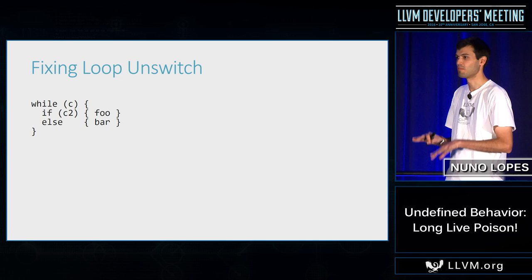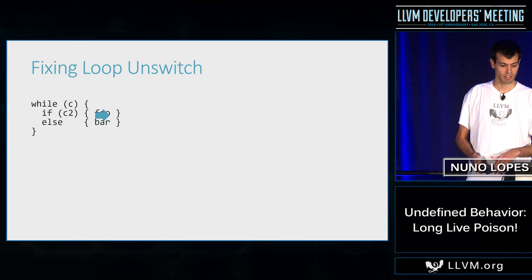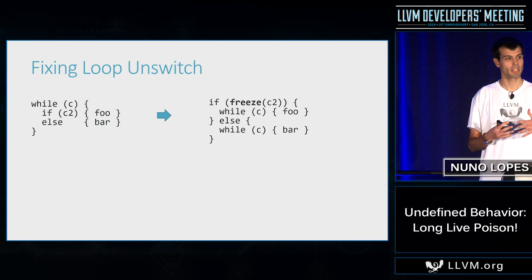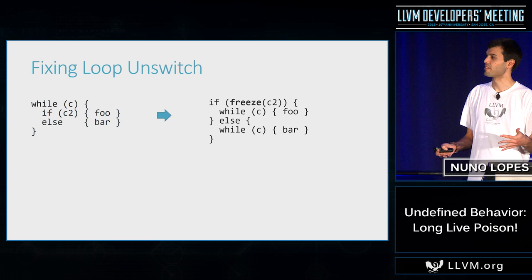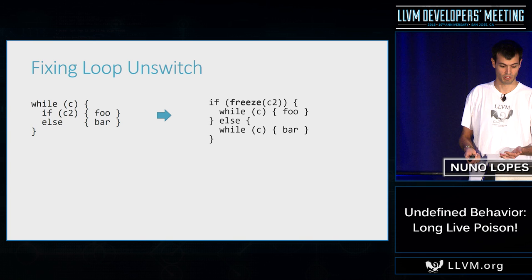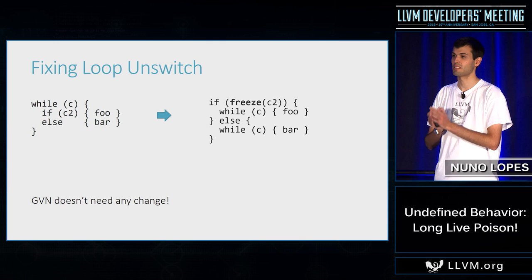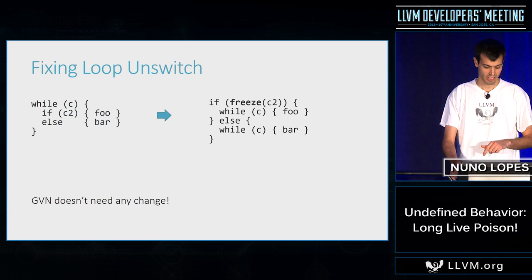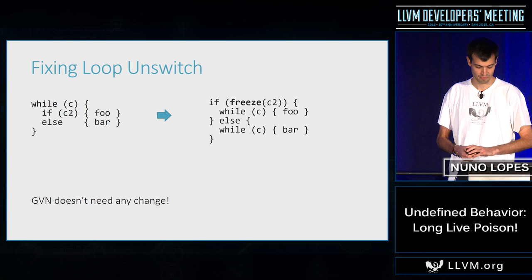We can now go back and see how to fix the GVN and loop unswitching problem. For loop unswitching, the fix is simple: if we freeze C2 before hoisting, then even if C2 is poison it becomes a non-deterministic value, so we now have a non-deterministic jump — which is what we wanted. For GVN, since we've defined branch on poison as undefined behavior, no change is required for correctness. As Daniel pointed out on the mailing list, if you want to optimize freeze then you need to make some changes, but for correctness GVN becomes fine. You can now run loop unswitching and GVN on the same function.